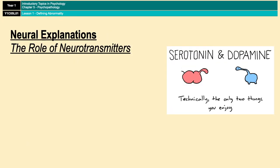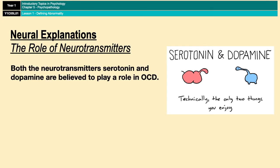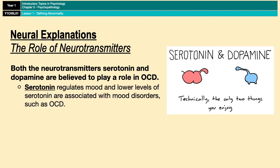Moving on, we have the role of neurotransmitters. Both serotonin and dopamine are believed to play a role in OCD, as we already touched on when looking at the COMT and CERT genes. Serotonin regulates mood, and lower levels of serotonin have been associated with certain mood disorders such as OCD, depression, and anxiety disorder, which could possibly be caused by the CERT gene.